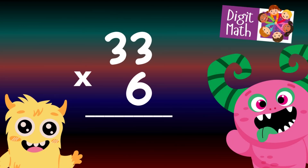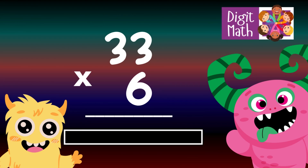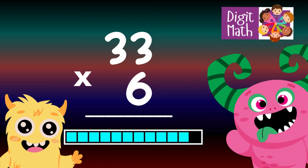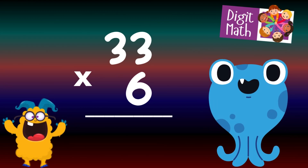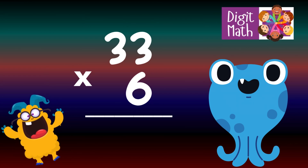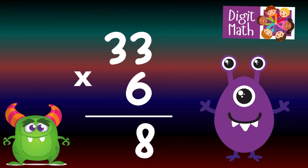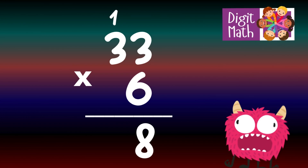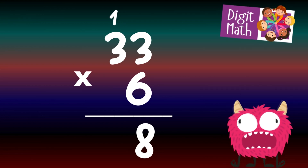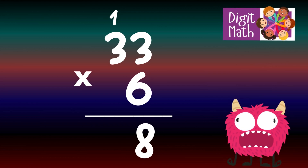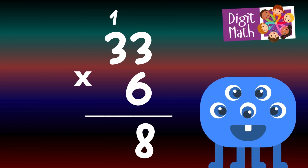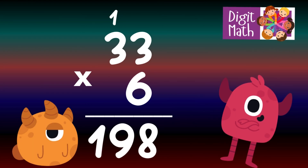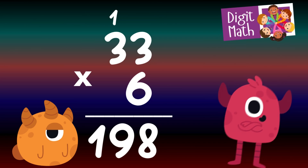33 times 6 — time to think. Let's go to the answer. To solve, multiply 33 by 6. In the Units column, multiply 6 by 3, which equals 18. Place 8 in the Units column and carry over 1 to the Tens column. In the Tens column, multiply 6 by 3 again, which equals 18. Add the carried over 1 to 18, making 19. Place 19 in the Tens and Hundreds column. So the final result is 33 times 6 equals 198.